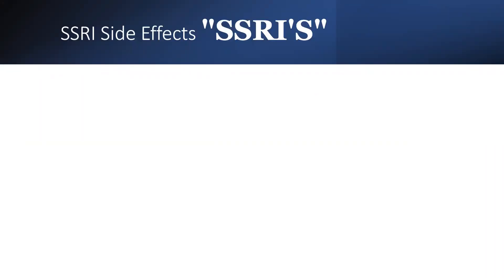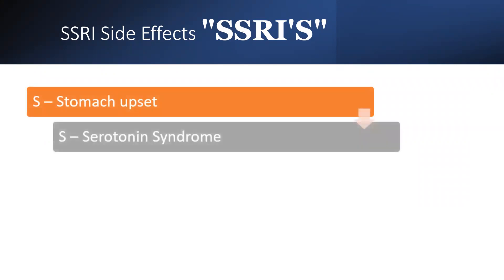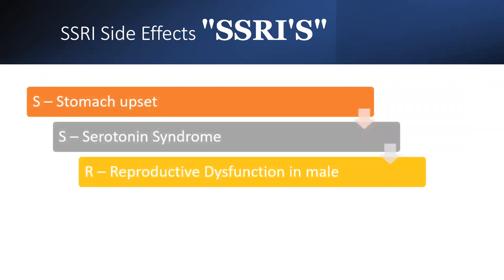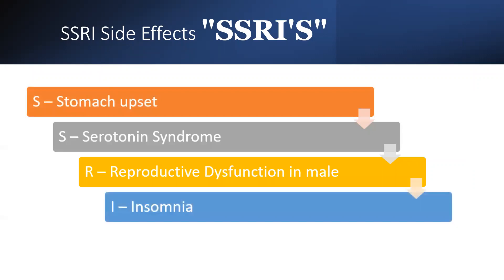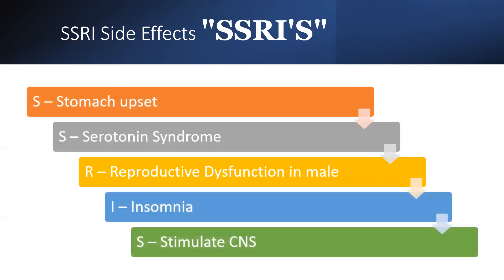For SSRIs, side effects are remembered using the acronym SSRIS: S for stomach upset, S for serotonin syndrome, R for reproductive dysfunction in males, I for insomnia, and S for stimulation of the CNS.